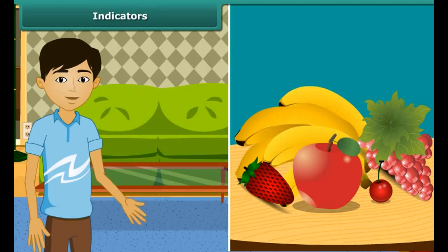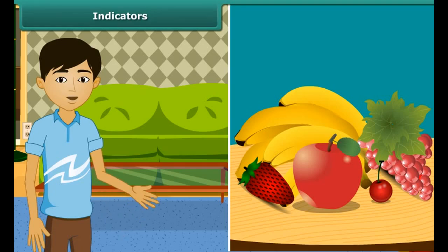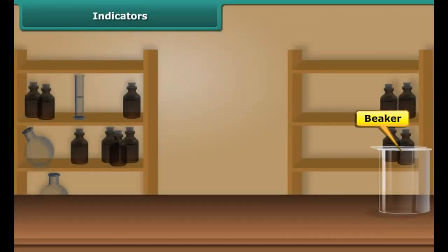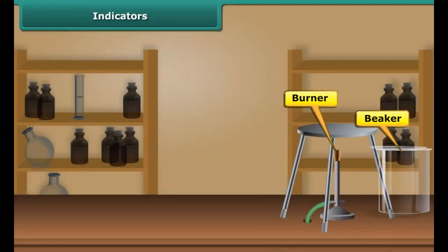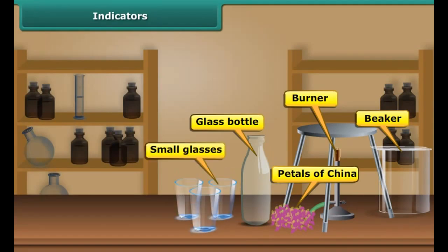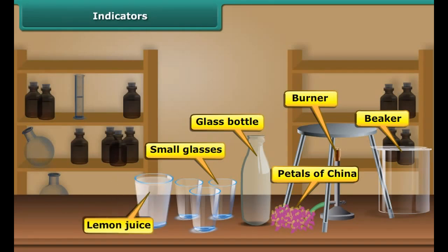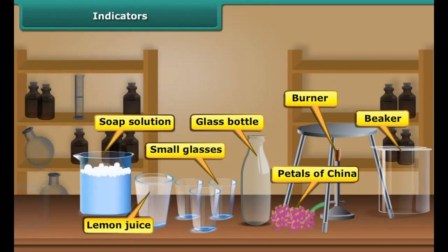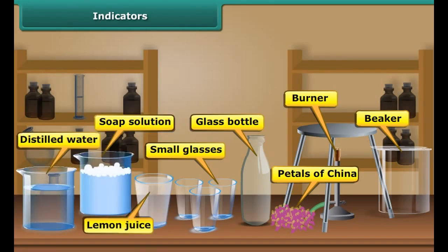You can easily test the acidic or basic nature of a substance by making a simple indicator solution at home. You will need a beaker, gas stove, petals of China rose, a clean glass bottle, three small glasses, lemon juice, soap solution, and distilled water.